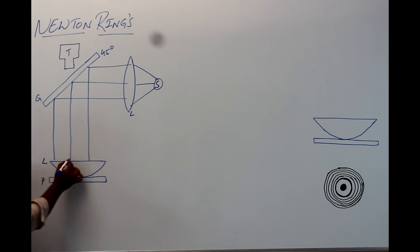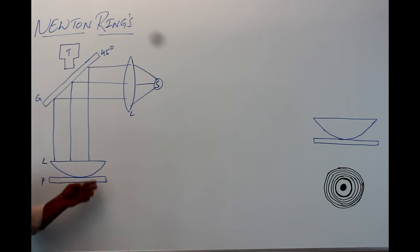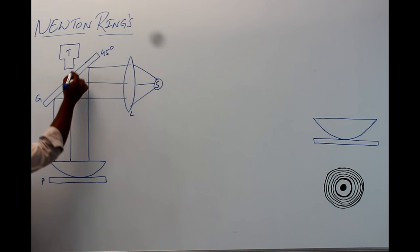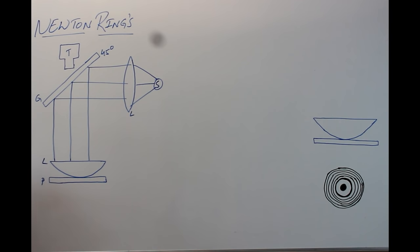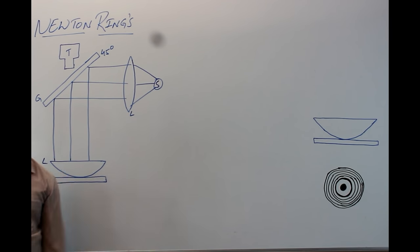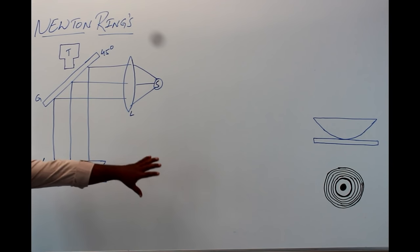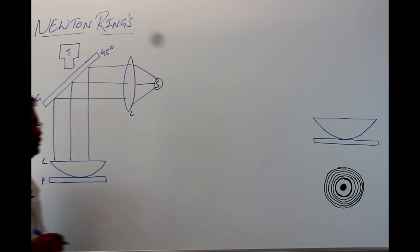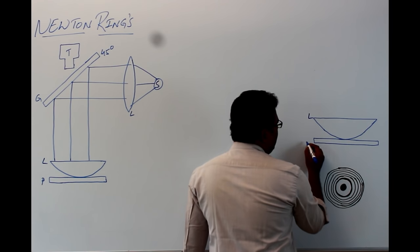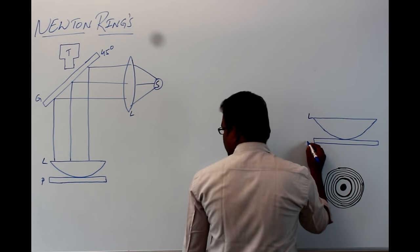Whenever the light rays are reflecting and interfering, on the telescope on top of the glass plate G, through the telescope you will observe a rings pattern. We get that rings pattern because of the lens L kept on a glass plate P.